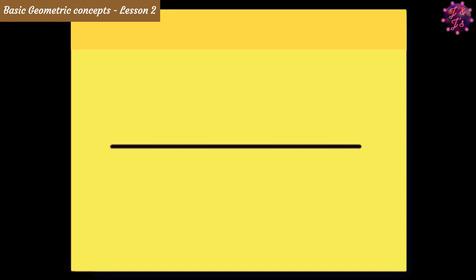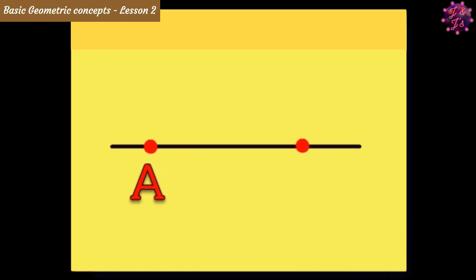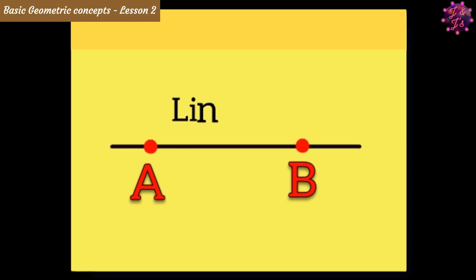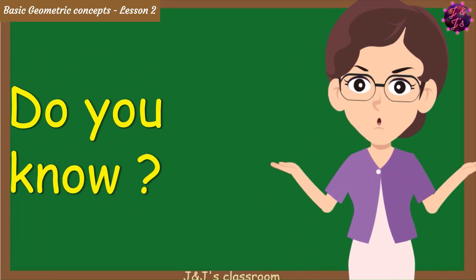Then, make two points with the name A and B. So this is a line segment AB. Do you know guys? A line segment has two end points.